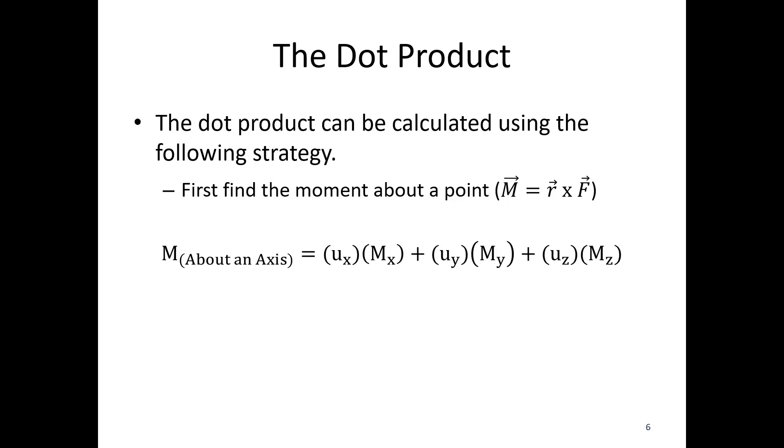The M value, the scalar value, the moment about an axis: I'm going to take the x component of my unit vector times the x component of my moment vector that I got from r cross F. I'm going to add the y component of my unit vector and the y component of my moment vector. And finally I'm going to take the z component of my unit vector and the z component of the moment vector I got from r cross F.